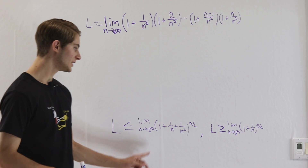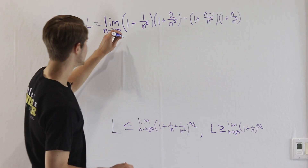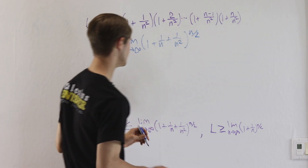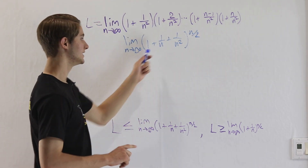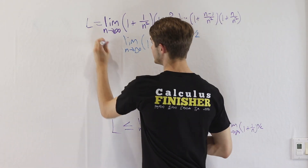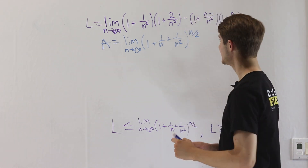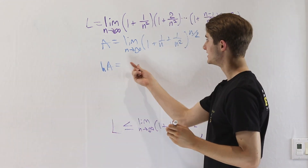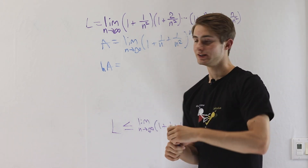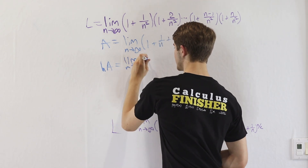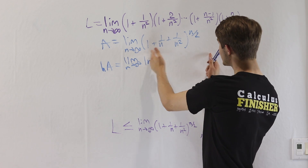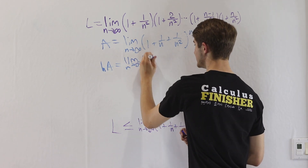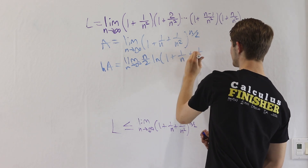We want the limit as n approaches infinity of 1 plus 1 over n squared to the power of n over 2. We'll call this limit A. Taking the natural log on both sides lets us bring the power to the front. The natural log of A equals the limit of n over 2 times the natural log of 1 plus 1 over n plus 1 over n squared. As n approaches infinity, n over 2 goes to infinity and the natural log term goes to 0 — this is an infinity times 0 situation, so we bring one term to the denominator and use L'Hôpital's rule.